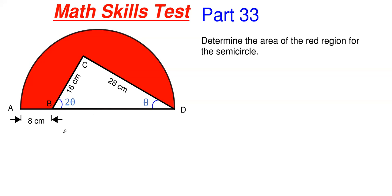One key piece of information we need to determine is the distance from B to D. This B to D value will give us the overall base for our triangle, and adding that with 8 centimeters will give us the overall diameter for our semicircle. We can then find the area of the semicircle and subtract out the area of the white triangle to get our answer. So let's work on getting BD first.